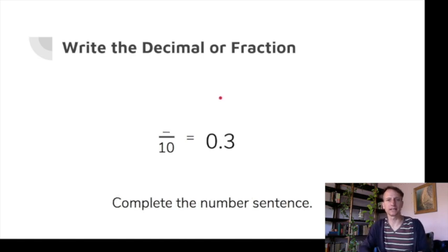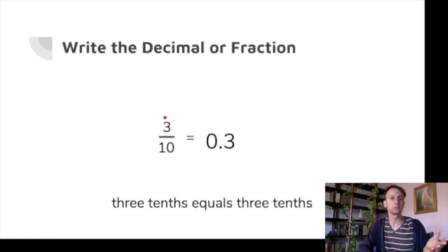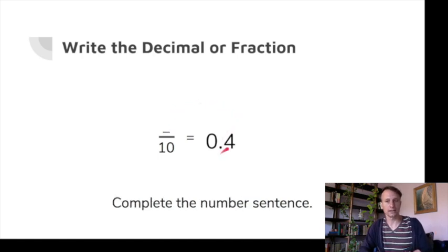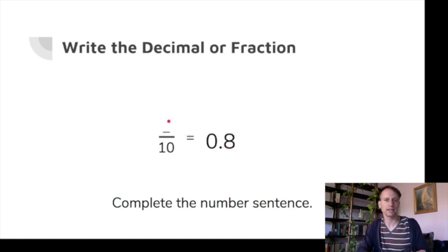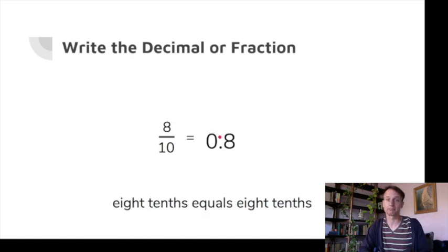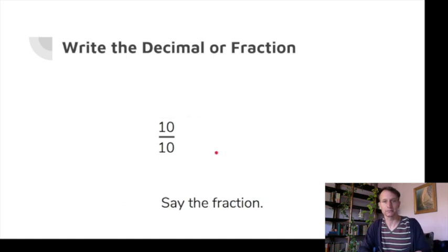Nine-tenths as a decimal is 0.9. Now in reverse: the decimal 0.3 we'd read as 'three-tenths,' so as a fraction we'd also write three-tenths. The decimal 0.4 we'd read as 'four-tenths' — a four in the tenths place — so as a fraction we write four-tenths. The decimal 0.8 is eight-tenths as a fraction. And 0.6 is six-tenths as a fraction.